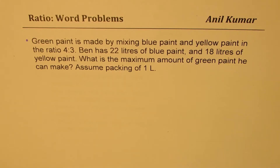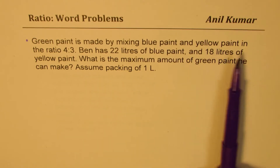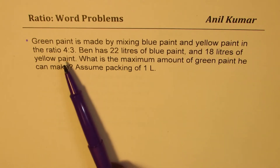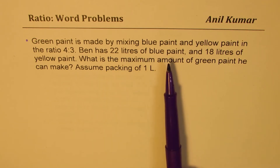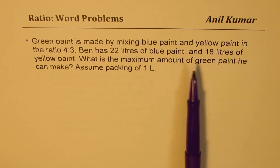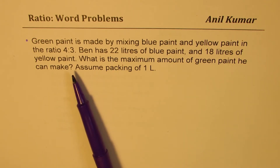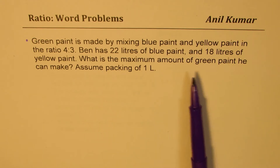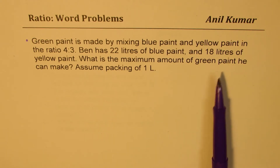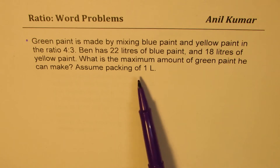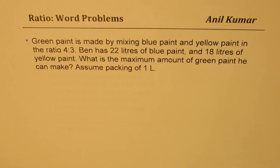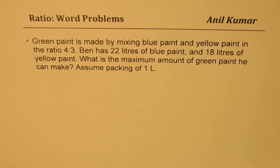Question two: Green paint is made by mixing blue paint and yellow paint in the ratio of 4 to 3. Ben has 22 liters of blue paint and 18 liters of yellow paint. What is the maximum amount of green paint he can make? Assume packing of 1 liter. You can pause the video, answer these questions, and then look at my solutions.